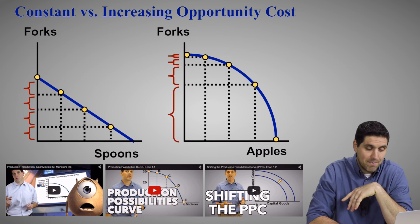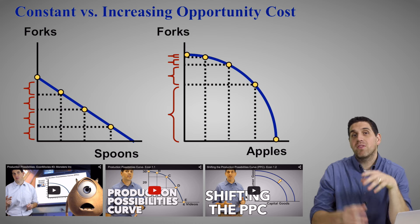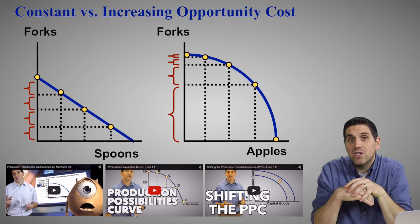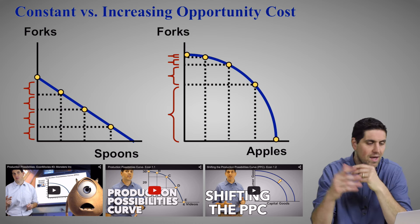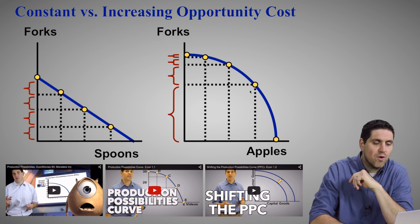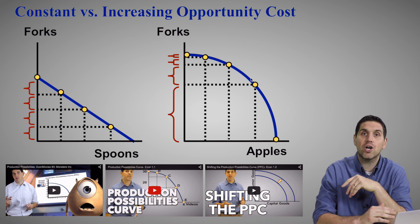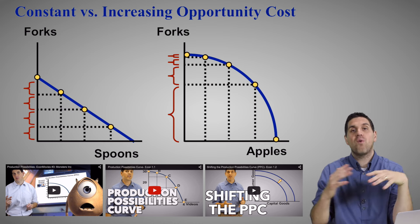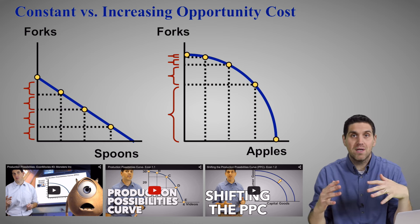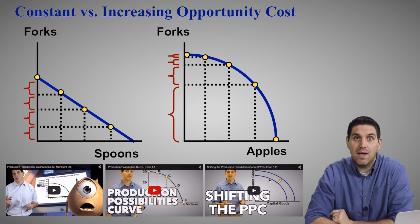I'm not going to talk about shifting the production possibilities curve in this video, but there are some practice questions in your packet — make sure to try those because it's pretty self-explanatory. If for whatever reason we have new technology, this entire curve can shift outward — we can get more forks and more apples. Go back and watch one of my other videos if you need more details.